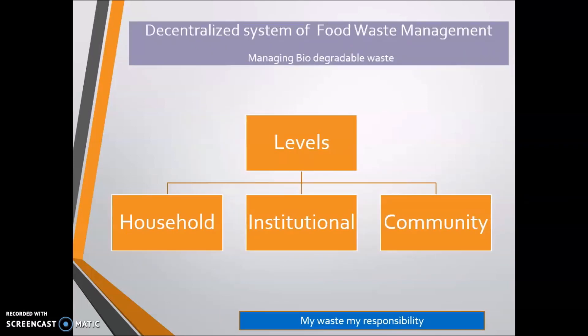Here are the techniques for collection of food waste in society. In India, it's a traditional approach — people are always living in society at the household or community level. We utilize a decentralizing system of food waste management for managing biodegradable waste. According to its level: level one is household, second is institutional, and third is community.